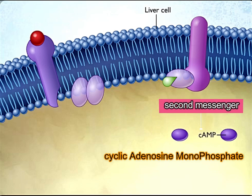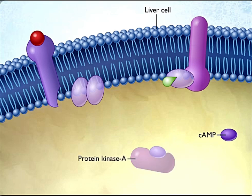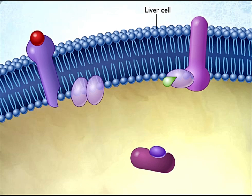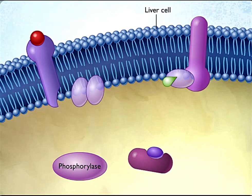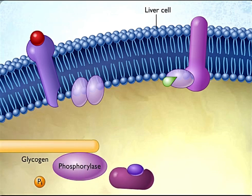The cAMP formed at the inner surface of the membrane diffuses within the cytoplasm, where it binds to and activates protein kinase A, an enzyme that adds phosphate groups to specific cellular proteins. In liver cells, protein kinase A phosphorylates and thereby activates another enzyme called phosphorylase, which converts glycogen into glucose 6-phosphate.